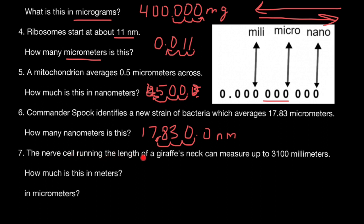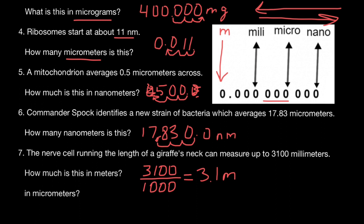The nerve running the length of a giraffe's neck can measure up to 3,100 millimeters. How much is this in meters? There are 1,000 millimeters in a meter, so we divide 3,100 by 1,000. We move the decimal point three places to the left — one, two, three — and we get 3.1 meters.